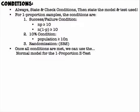For the conditions, you always want to state and check them, then state the model and test used. For one proportion samples, the conditions are the success-failure condition — n times P ≥ 10 and n times (1 − P) ≥ 10 — the 10% condition where the population must be greater than 10 times n, and randomization, where the sample is representative of the population.